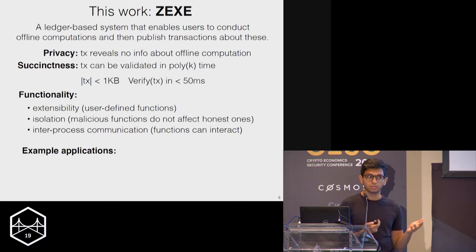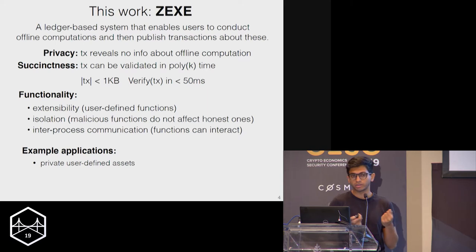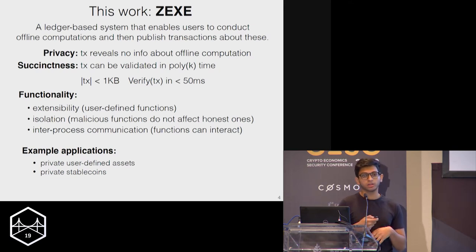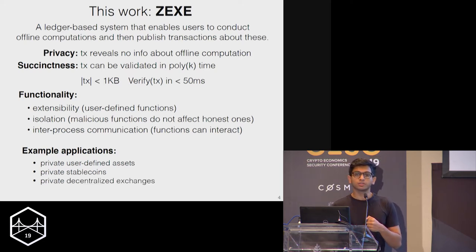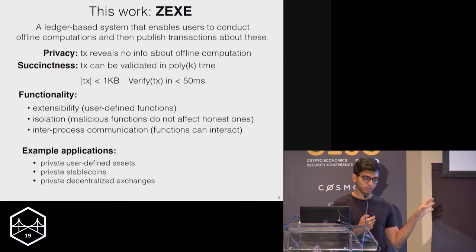In the paper we show how to construct some example applications. We show how to construct user-defined assets which attain ideal privacy guarantees — Zcash-style privacy. We show how to extend this to support stable coins with arbitrary regulatory issuance properties. And finally, we also show how you can construct private decentralized exchanges, which allow you to trade these kinds of assets in a manner that prevents harmful things like front running.